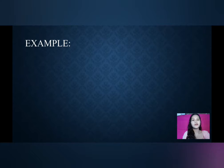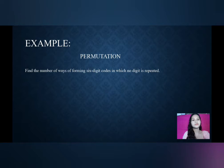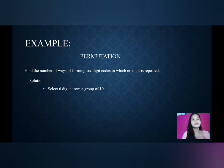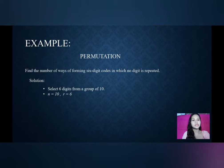Now, let's go to the example in finding the permutation. Find the number of ways of forming 6-digit codes in which no digit is repeated. Solution: Select 6 digits from a group of 10. Therefore, our n is equal to 10 and our r is equal to 6.